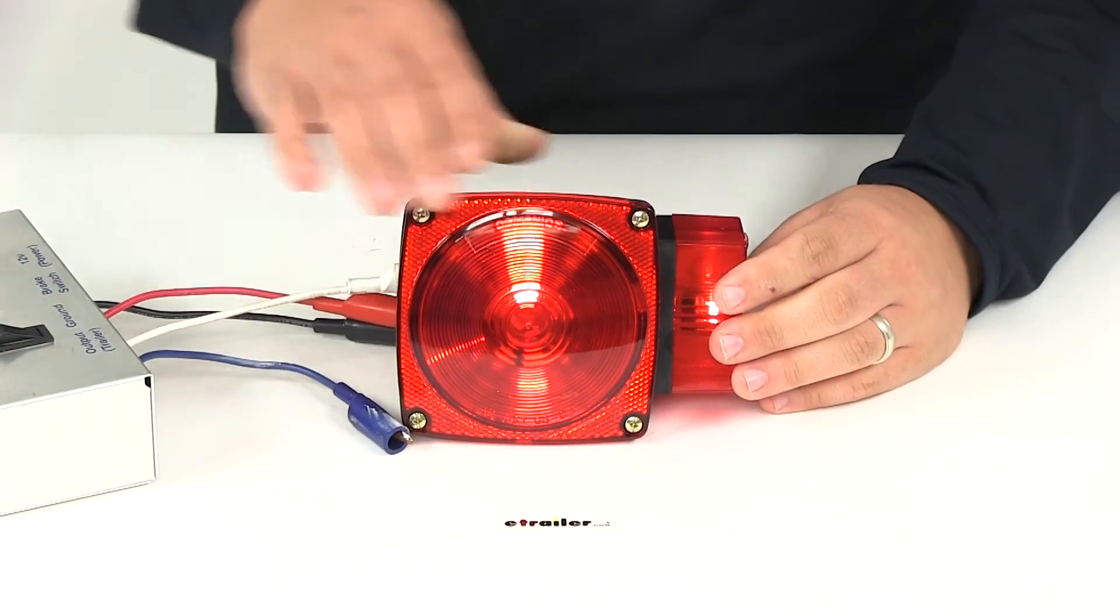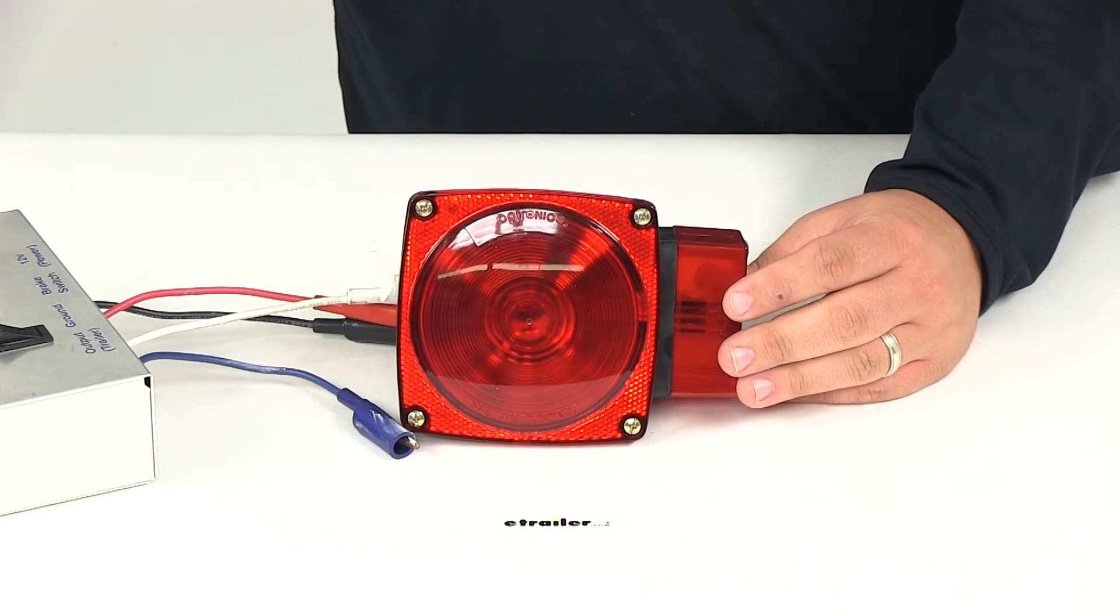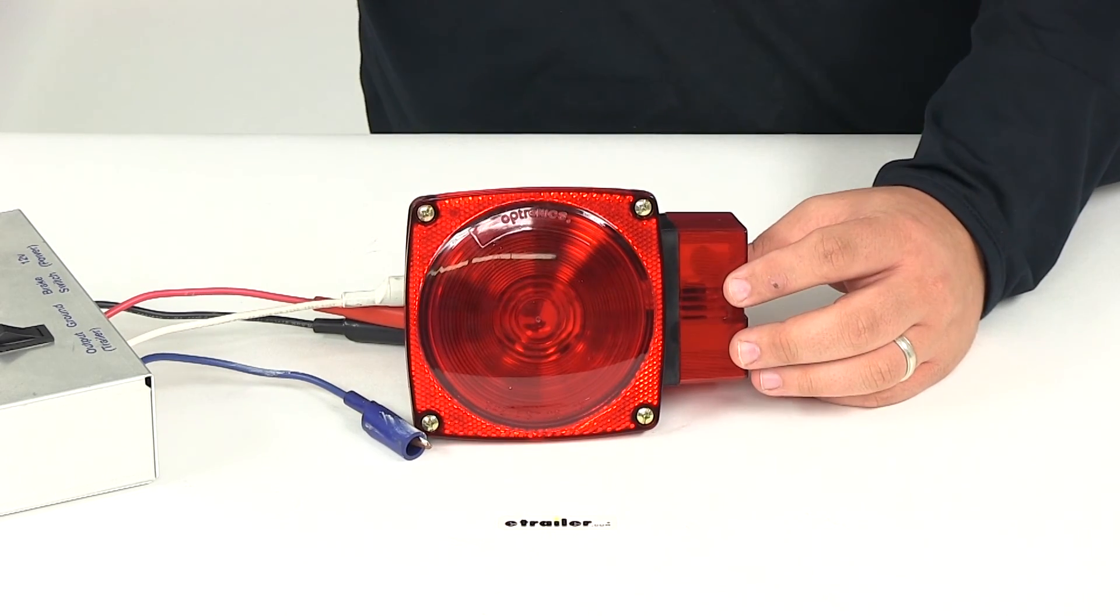That's going to do it for today's review of part number ST-2RB. This is the square trailer light for the right-hand side of our trailer from Optronics.